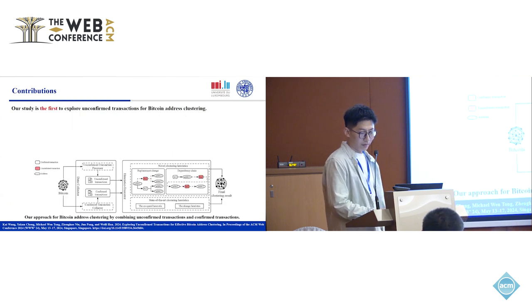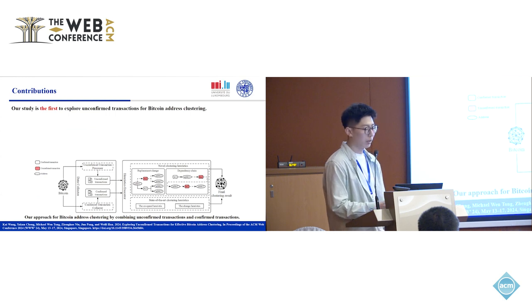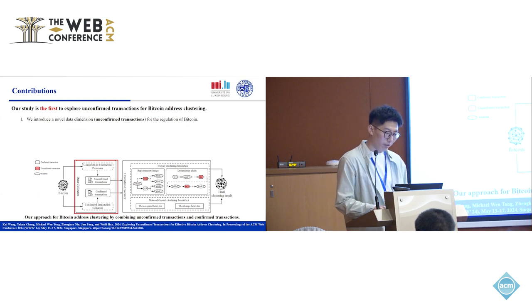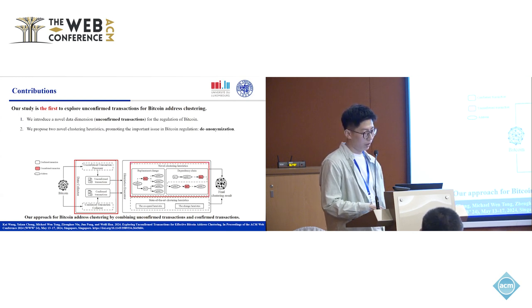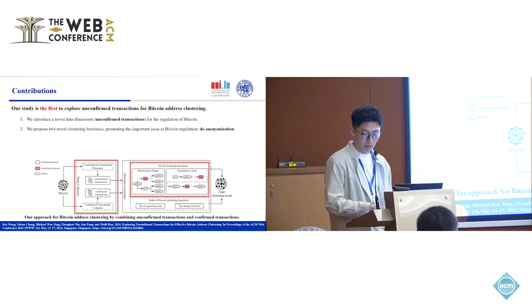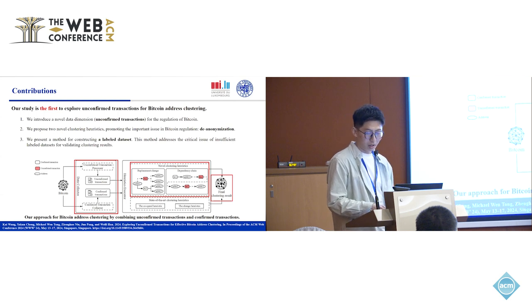To the best of our knowledge, we are the first to explore unconfirmed transactions for Bitcoin address clustering. Our study makes several contributions. First, we introduce a novel data dimension — unconfirmed transactions — for the regulation of Bitcoin. Second, we propose two novel clustering heuristics, promoting the important issue in Bitcoin regulation: de-anonymization. Third, we present a method for constructing a labeled dataset for validating clustering results.